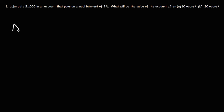The formula that we need to use is A, which is the final account value, equals P, the principal or the amount that he invests, times 1 plus R over N raised to the Nt. R is the interest rate as a decimal. N is the number of times interest is credited to an account on an annual basis, or per year rather.